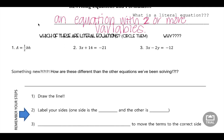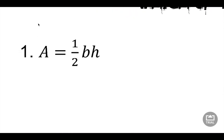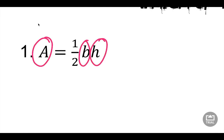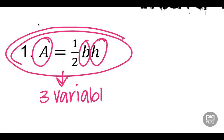Which of these are literal equations? Circle them. Remember, a literal equation has two or more variables - two or more letters in it. Does this first one have two or more letters? If I look at this first one, I've got an A, I've got a B, and I've got an H. That's three. So this is a literal equation because it has three variables.